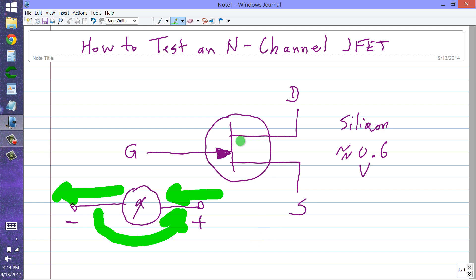Here is your n-channel junction field effect transistor. You can connect these two leads of the ohmmeter to the three leads of this device, the source, the gate, and the drain, in six possible ways. Let me show you those six ways and what results you should get, assuming this device is not burned out.